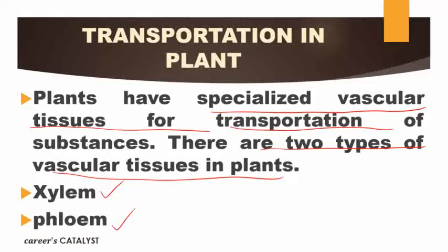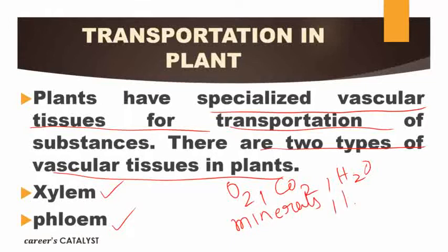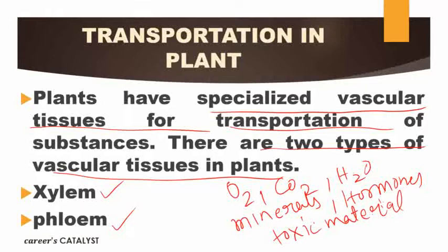Now, what does a plant actually need to transport? It is not only water, minerals, and food. Plants also need to transport oxygen, carbon dioxide, water, minerals, hormones, toxic materials, and most importantly food. These are all the things that plants need to transport inside the plant body.